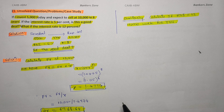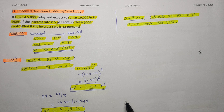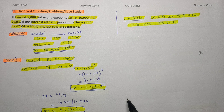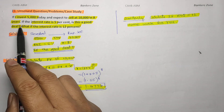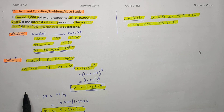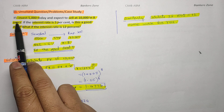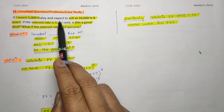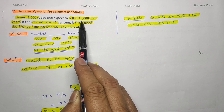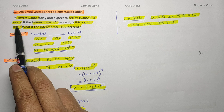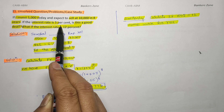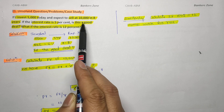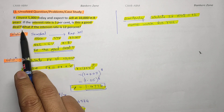In this session we will discuss some unsolved numericals of the Time Value of Money from the Macmillan book. See numerical 11: if I invest 5000 today and expect to sell at 10,000 in eight years, and the rate of interest is five percent, is this a good deal? What happens if the interest rate is 12 percent?